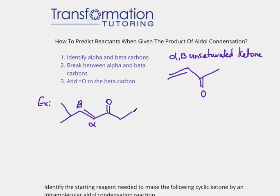Notice that we also have alpha and beta on the other side, but we are looking at the double bond that forms the double-single-double bond=O pattern — that is what we care about. This is what basically represents our aldol product. Once we have identified our alpha and beta carbons, we will break the bond between the alpha and beta carbon.